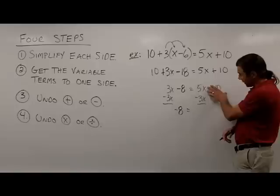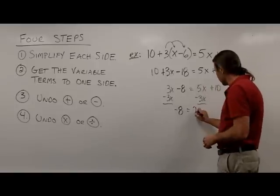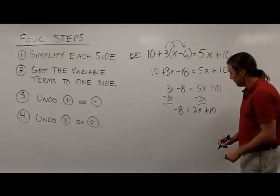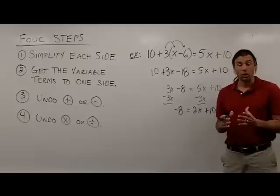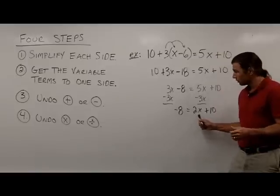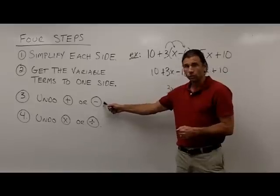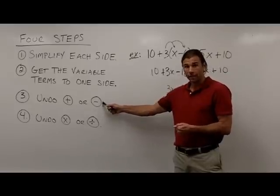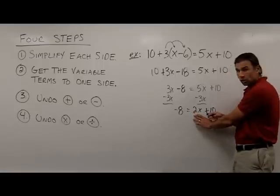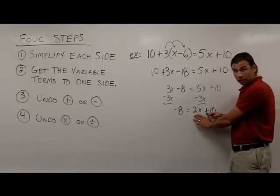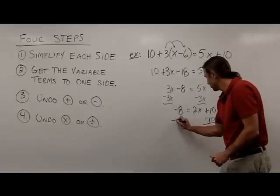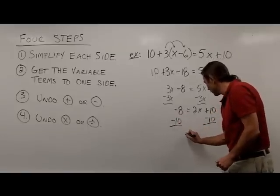On the right side, 5x minus 3x gives me 2x, and I'll bring down the positive 10. Now I've got all of the variable terms over here on the right side. So I'm ready to move on to step 3, which is to undo addition or subtraction on the variable side. My variable side is the right side, and I do have some addition here that I would like to undo. So I'm going to subtract 10 from both sides.